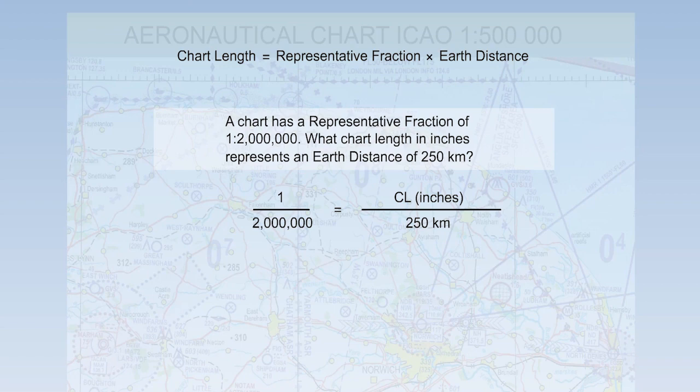We now need to get chart length and earth distance into the same units. There is more than one way of doing this, but we'll convert the kilometres to inches. Multiply by 1000 to get the earth distance in metres, then by 3.28 to get it into feet, then by 12 to get it into inches.